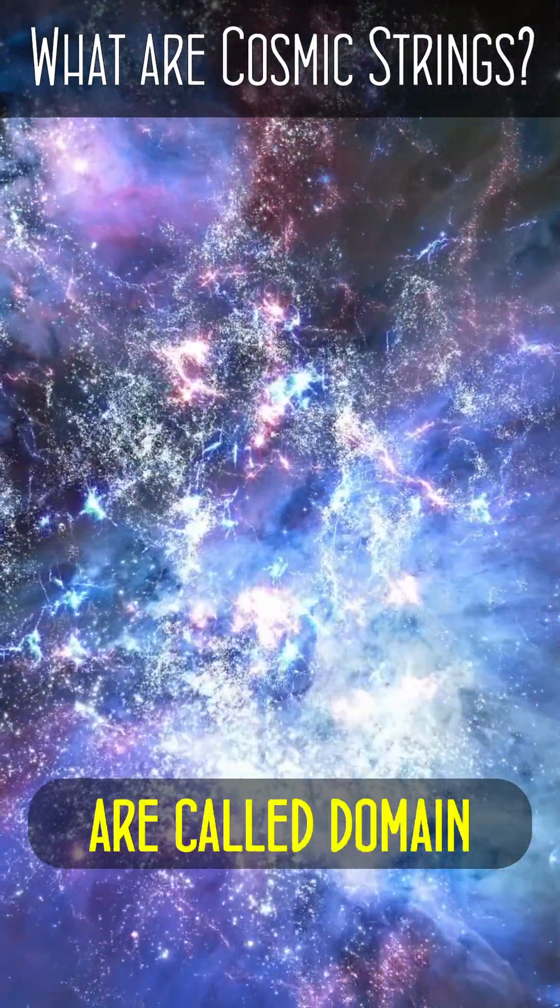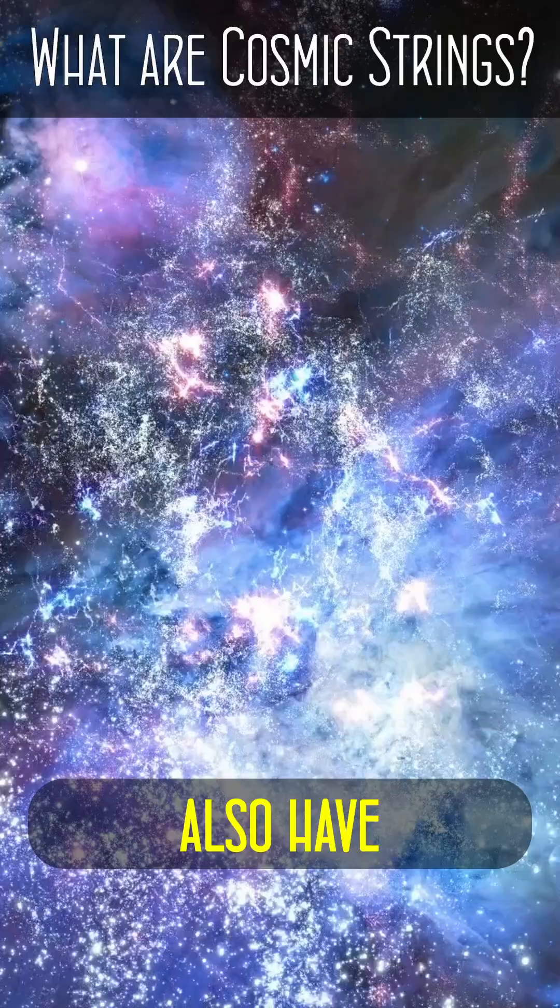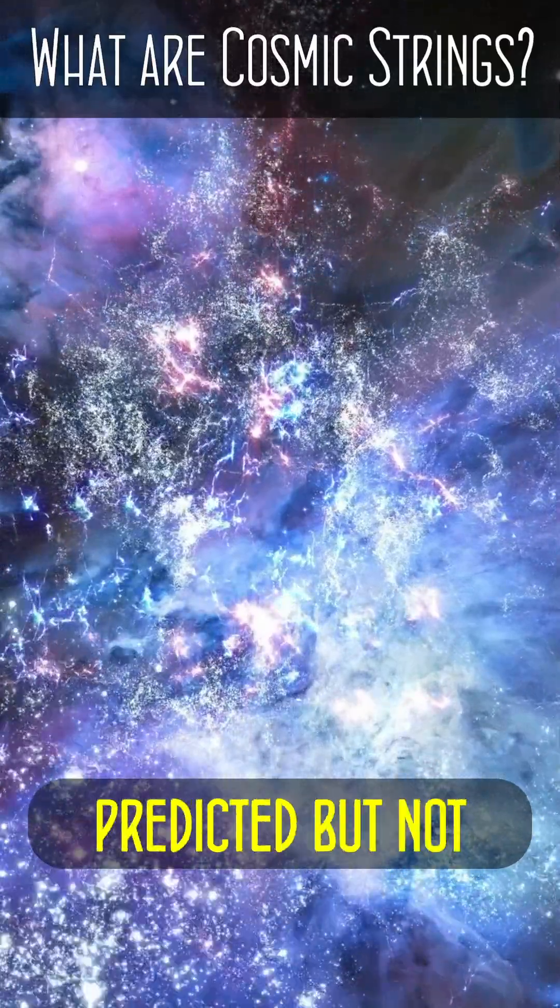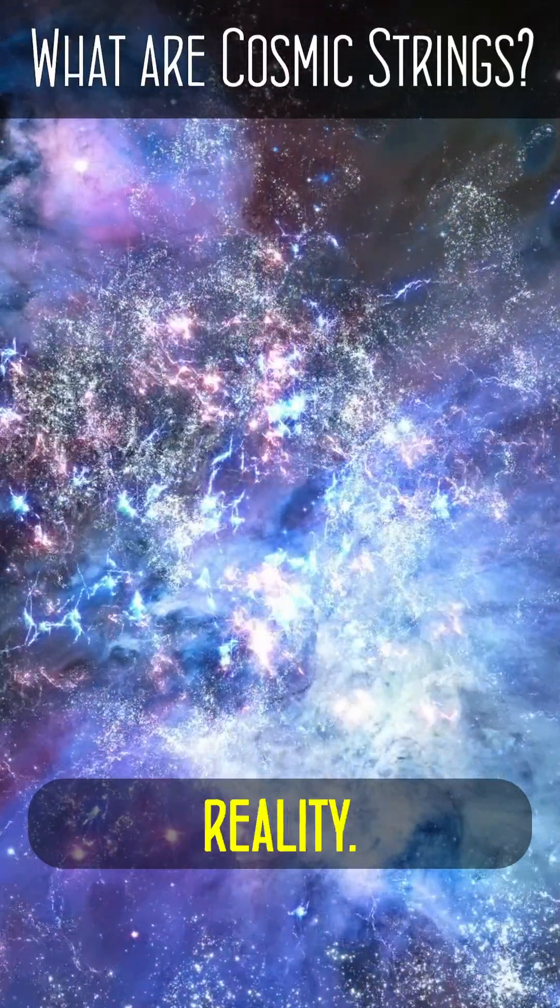Two-dimensional versions of these are called domain walls, and we also have monopoles as well as other predicted but not yet discovered topological defects in reality.